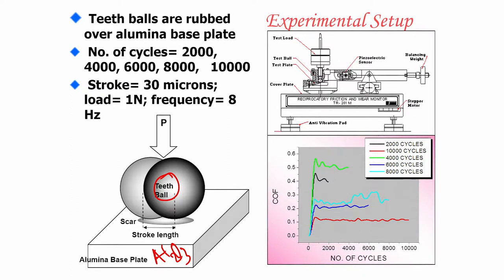Alumina and zirconia are ceramic materials that can be used as dental replacement or dental restorative materials. We investigated the friction and wear of alumina against natural teeth, using up to 10,000 cycles with stops at intermediate cycles to observe how wear progresses. The stroke length was 30 microns and the load was kept very low at 1 Newton, to simulate masticatory forces in the oral cavity.